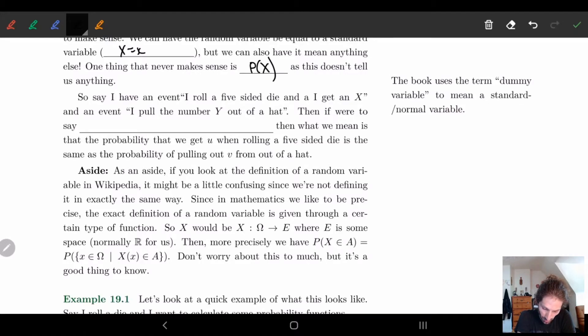What's next? So say I have an event. I rolled a five-sided die and I get an X. In an event, I pulled the number Y out of a hat. Whoa, rewind. What do you mean we got two random variables? Yeah. So we can have two different events and each one will have their own random variables.